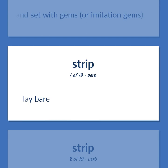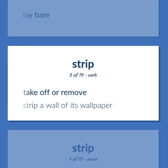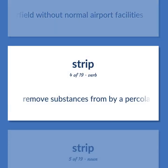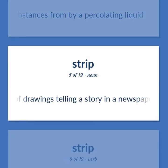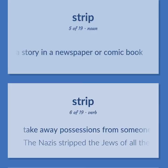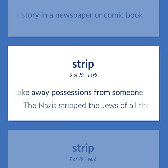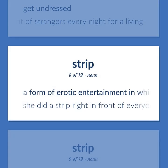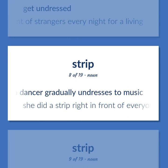Lay bare. Take off or remove. Strip a wall of its wallpaper. An airfield without normal airport facilities. Remove substances from by a percolating liquid. A sequence of drawings telling a story in a newspaper or comic book. Take away possessions from someone. The Nazis strip the Jews of all their assets. Get undressed. She strips in front of strangers every night for a living. A form of erotic entertainment in which a dancer gradually undresses to music. She did a strip right in front of everyone.